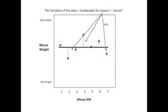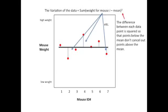We can calculate the variation of the data around this mean as the sum of the squared differences of the weight for each mouse i, where i is an individual mouse represented by a red dot, and the mean. The difference between each data point is squared so that the points below the mean don't cancel out the points above the mean.